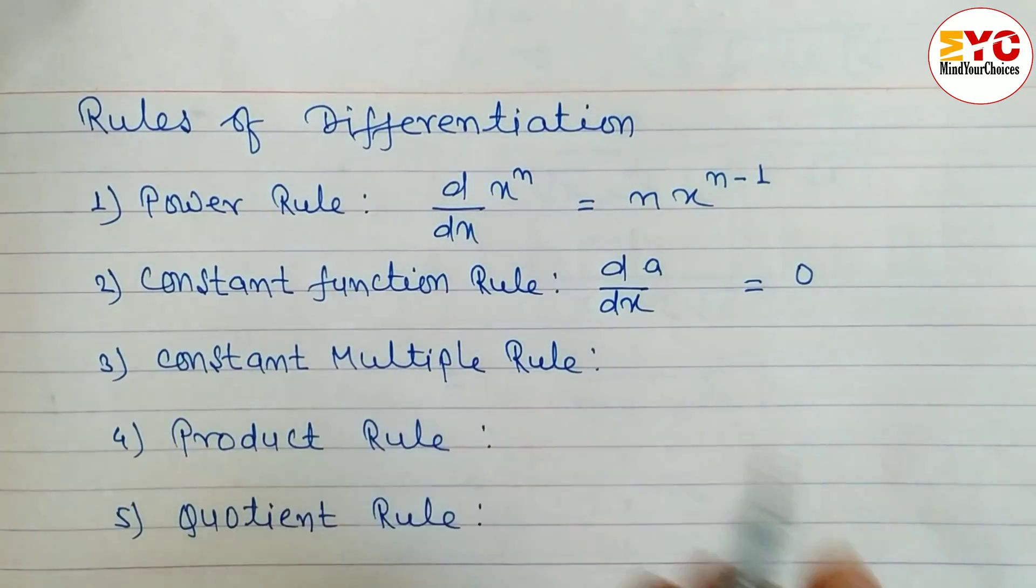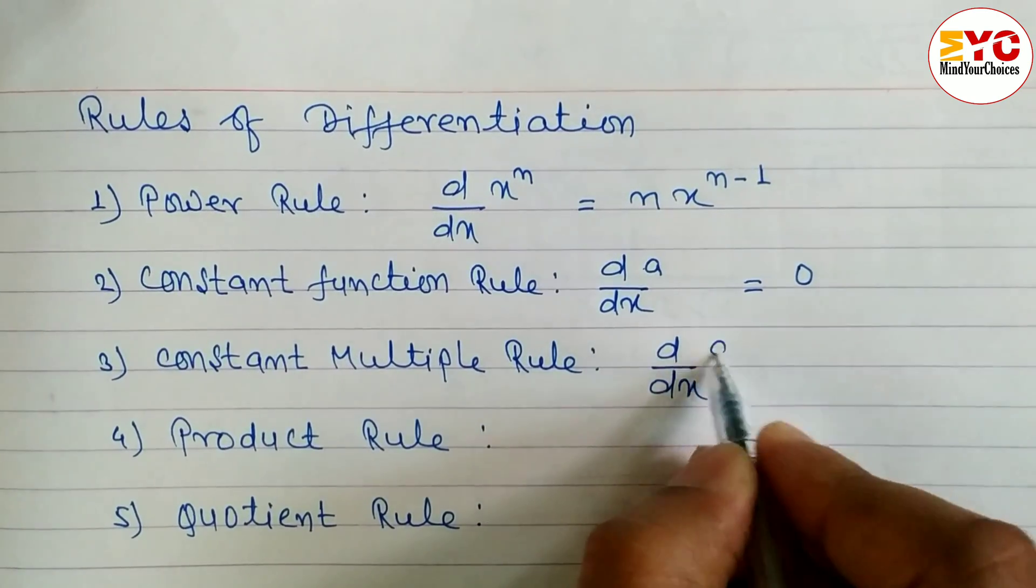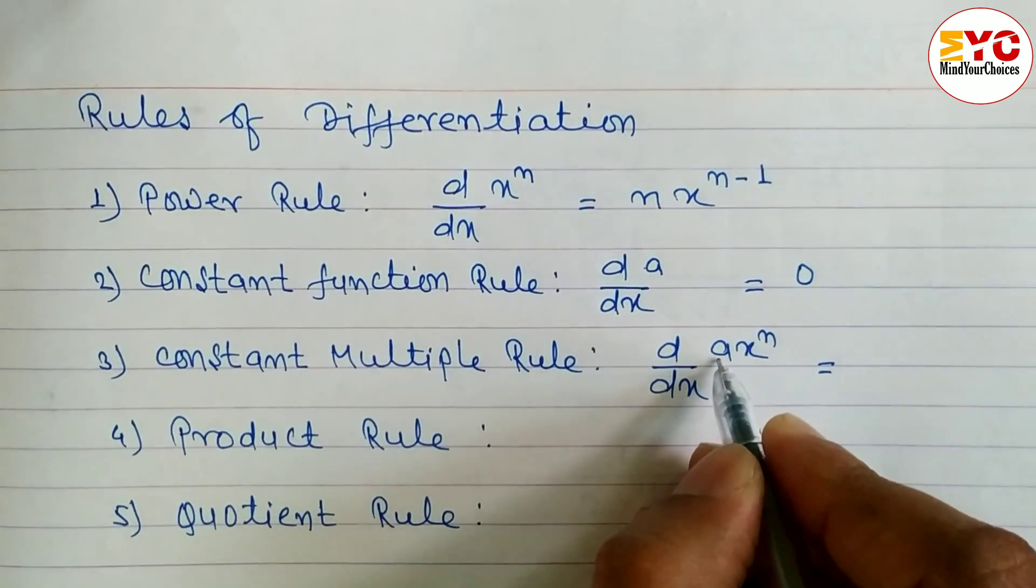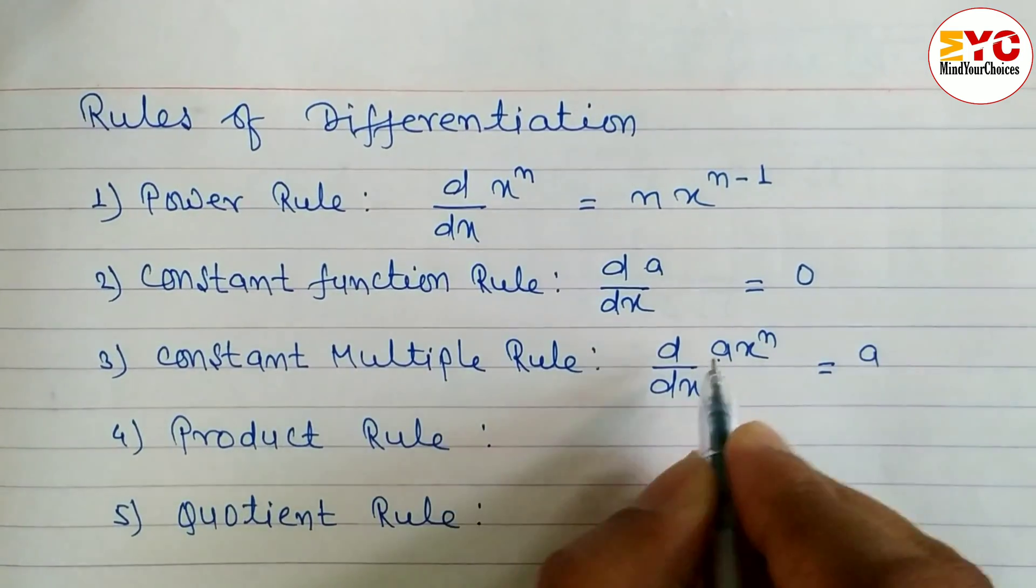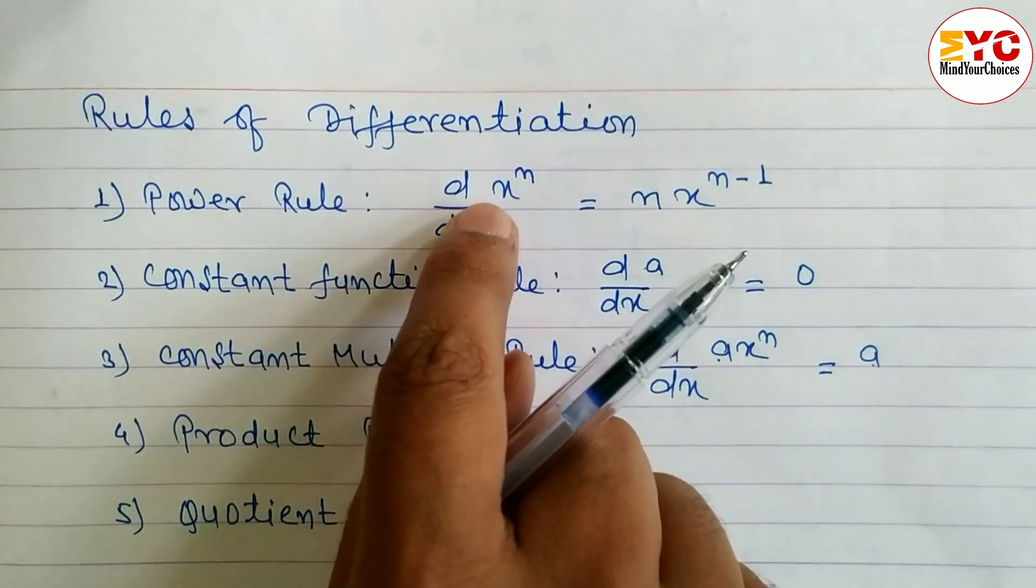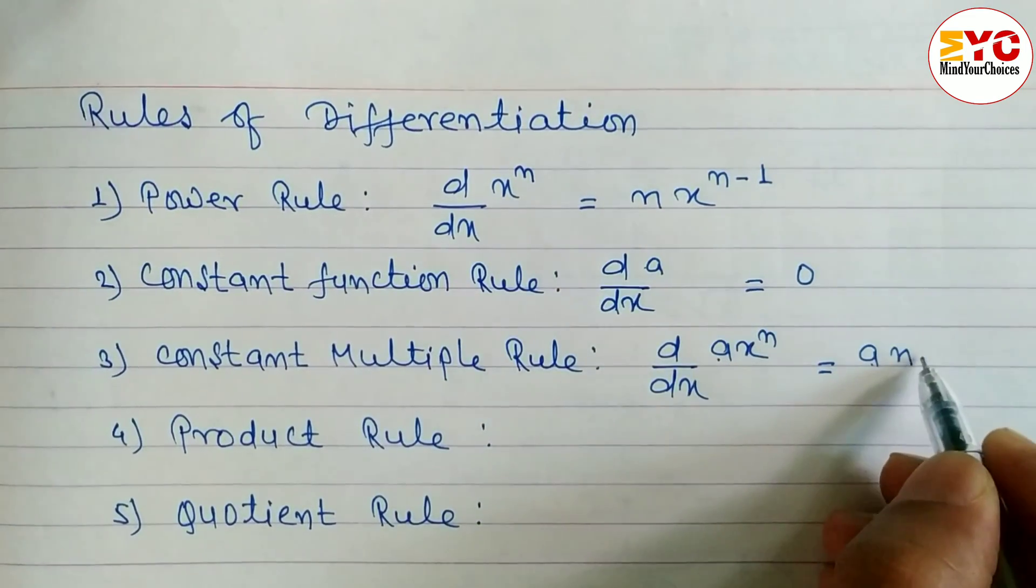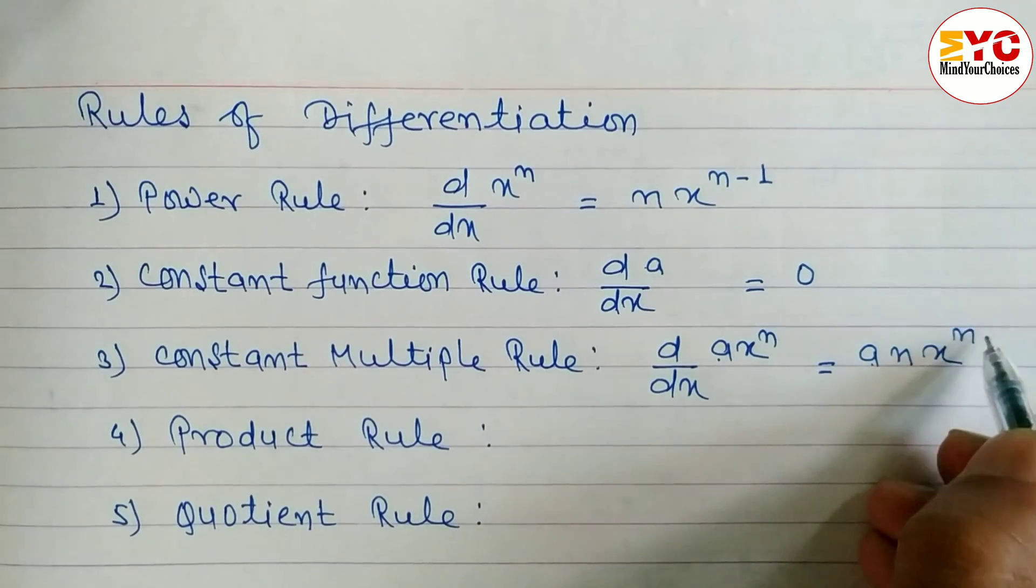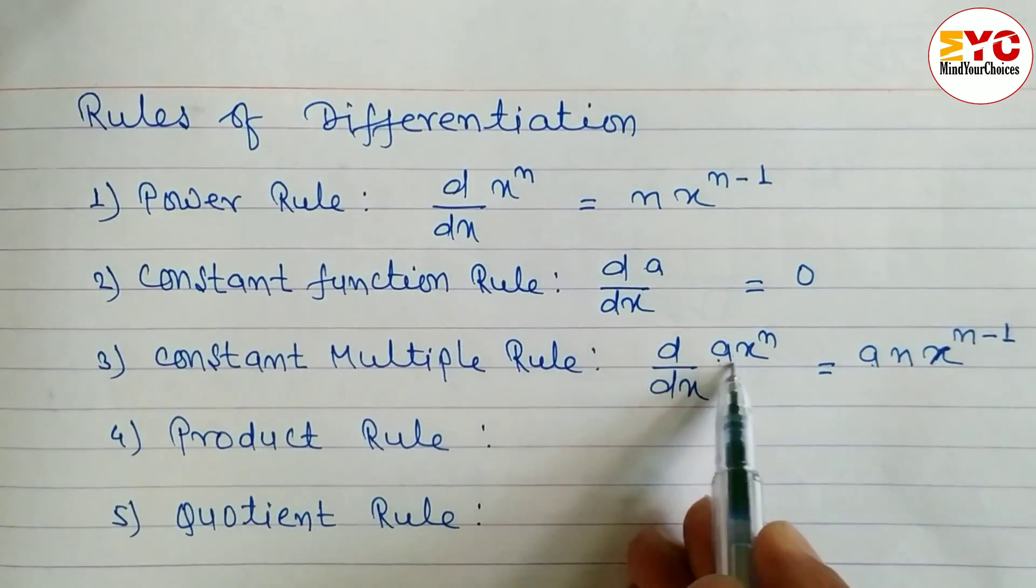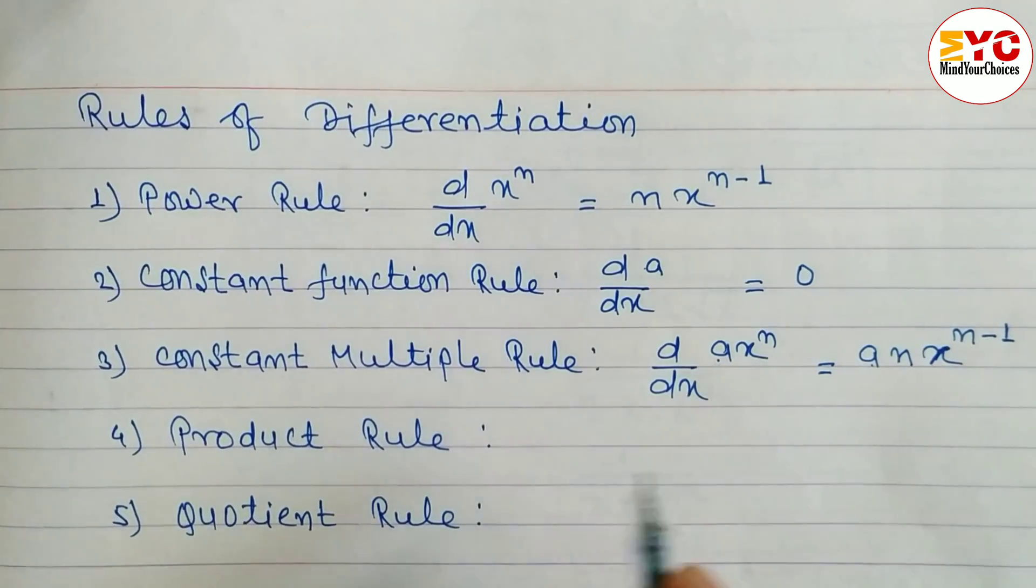Next is the constant multiple rule. The derivative of a constant times x to the power n: first write the constant a in front, then apply the power rule to d/dx of x to the power n. This gives us n in front, then x to the power n minus 1. With any constant number, write the constant first, then the power, then x to the power n minus 1.